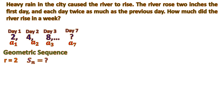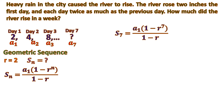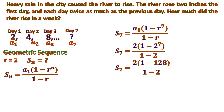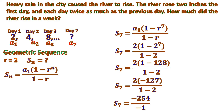Let's solve for the sum. We have the formula for a finite geometric sequence: S sub n equals A sub 1 times (1 minus r to the power of n) all over (1 minus r). Substituting n as 7, A sub 1 as 2, and common ratio r as 2: we compute 2 to the power of 7, which is 128. Then 1 minus 128 is negative 127. Multiplying 2 times negative 127 gives negative 254. At the bottom, 1 minus 2 is negative 1. Negative divided by negative becomes positive, so the answer is 254 inches. In total, for the whole week, the river rose by 254 inches.